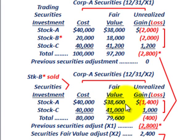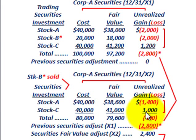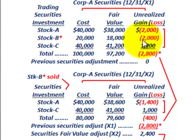Since the fair value of $79,600 is less than the cost of $80,000, we have an unrealized loss of $400 for year X2. On an individual basis, Stock A has an unrealized loss of $1,400 (cost $40,000 vs. fair value $38,600) and Stock C has an unrealized gain of $1,000 (cost $40,000 vs. fair value $41,000), which nets to the same $400 loss.